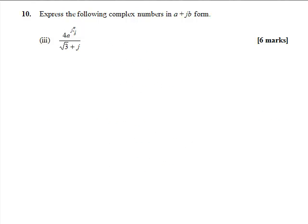Part 3: 4e to the j pi over 3 over root 3 plus j. First of all, let's take the denominator and let that equal z1. So z1 is equal to root 3 plus j, and we'll put this into the r cos theta plus j sine theta form.